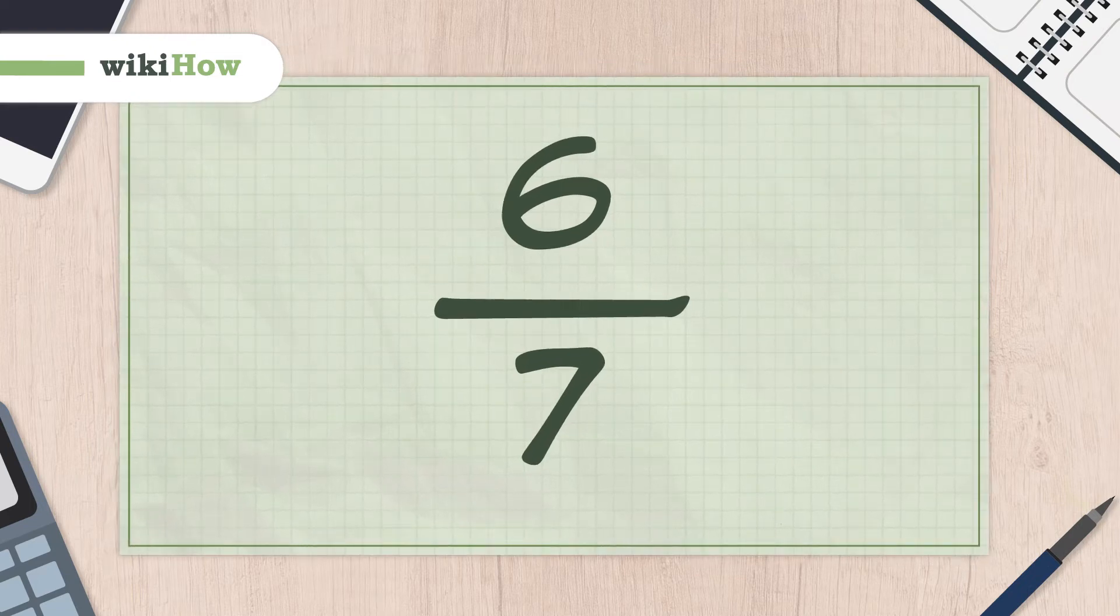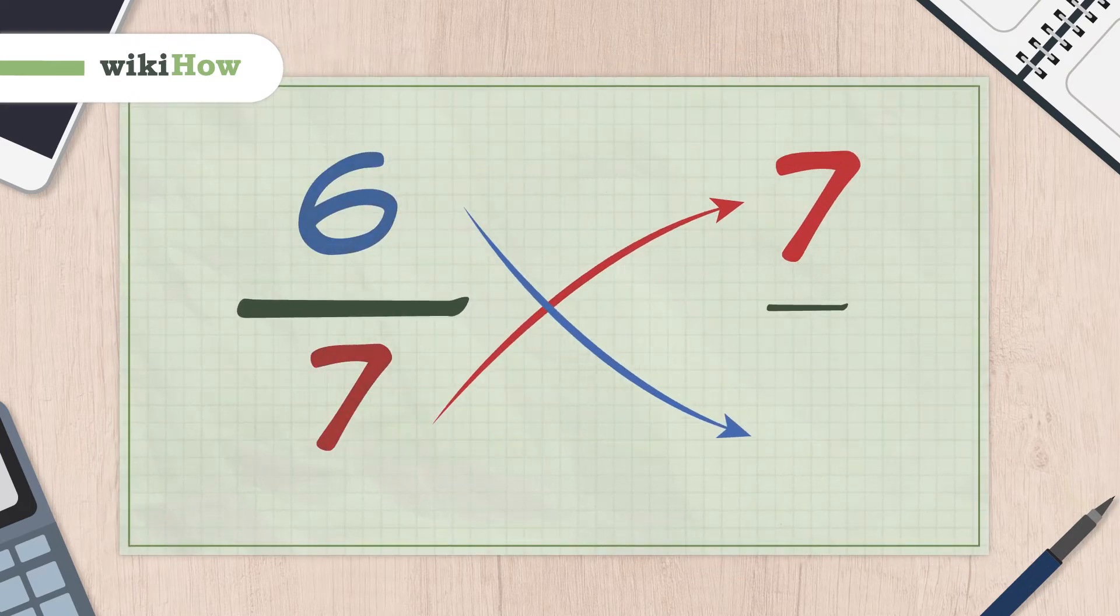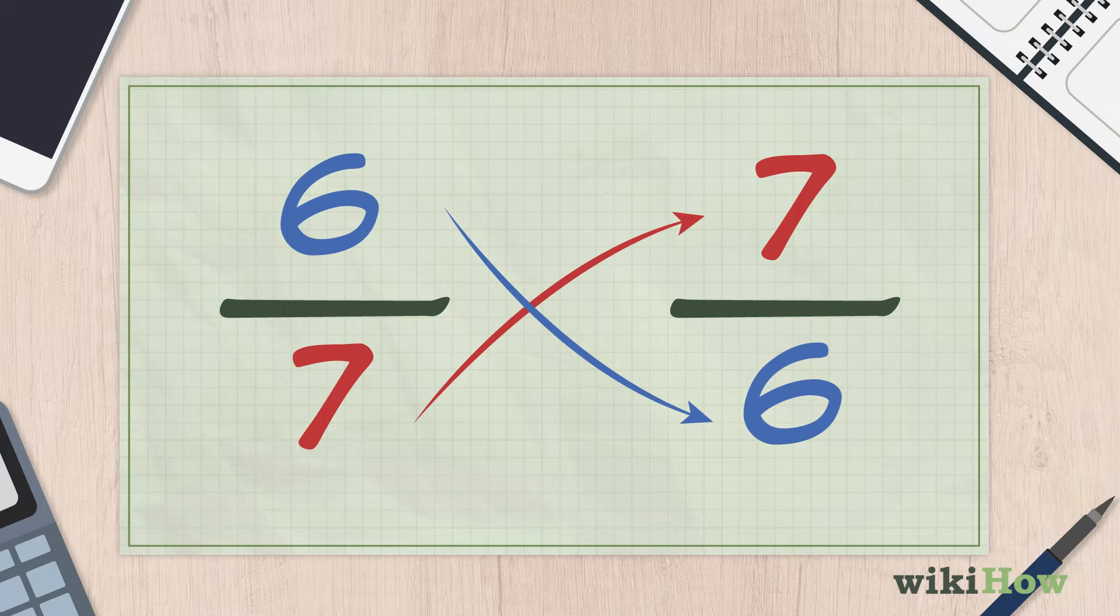Finding the reciprocal of a fraction is simple. All you have to do is flip the fraction upside down so that the numerator becomes the denominator.